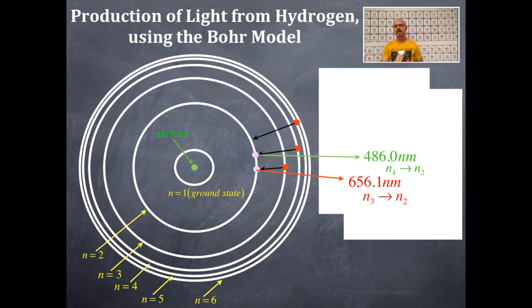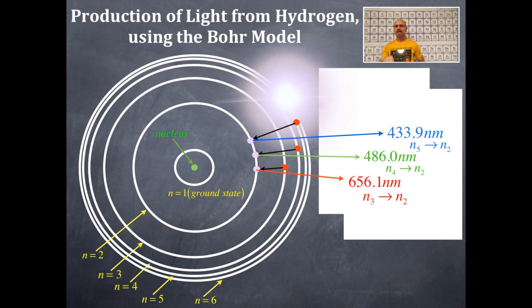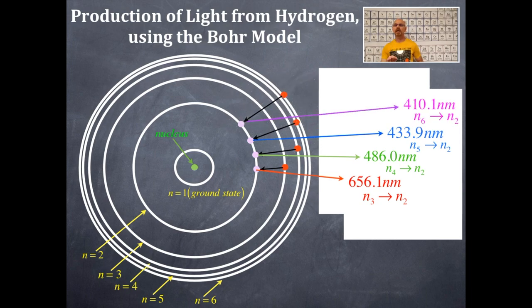The next one here is N equals 5 to N equals 2, and that is going to emit light of the wavelength of 433.9 nanometers. Then we have another electron in N equals 6, it's going to fall down to N equals 2, and that is going to have a wavelength of 410.1 nanometers.